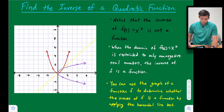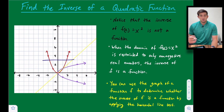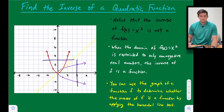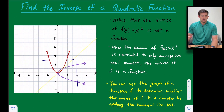If I look at my original parabola opening up and draw a horizontal line through it, I see there are two points on that graph that lie on the horizontal line. That tells me the inverse of this parabola would not be a function, because the inverse would not satisfy the vertical line test. That's how we use these tests to check whether the inverse of a function is itself a function.